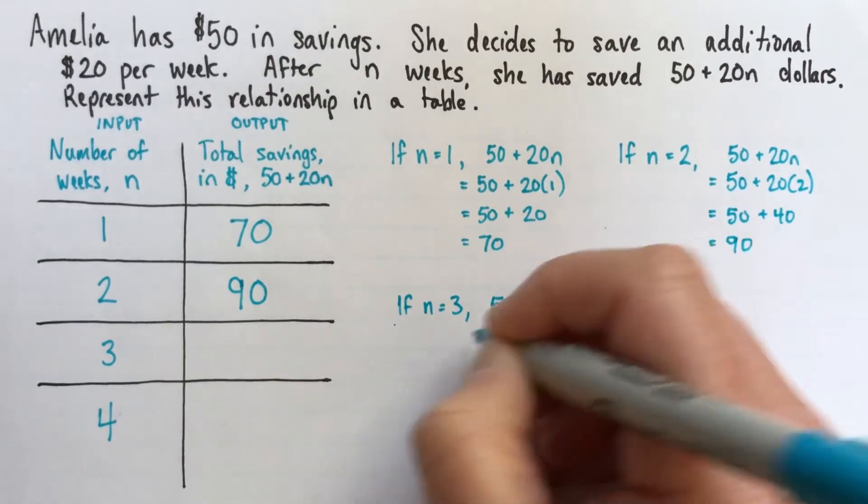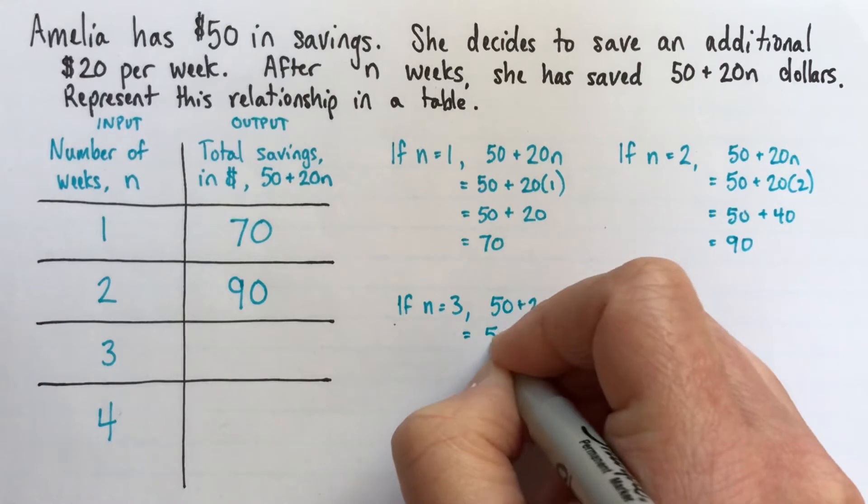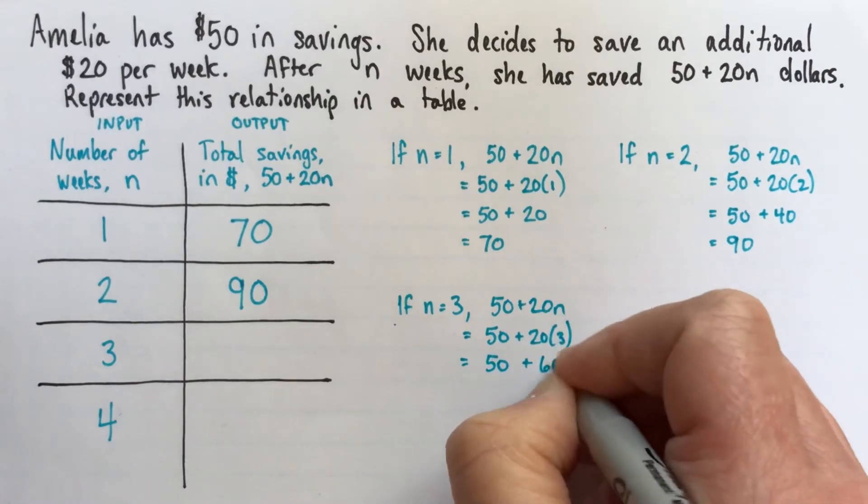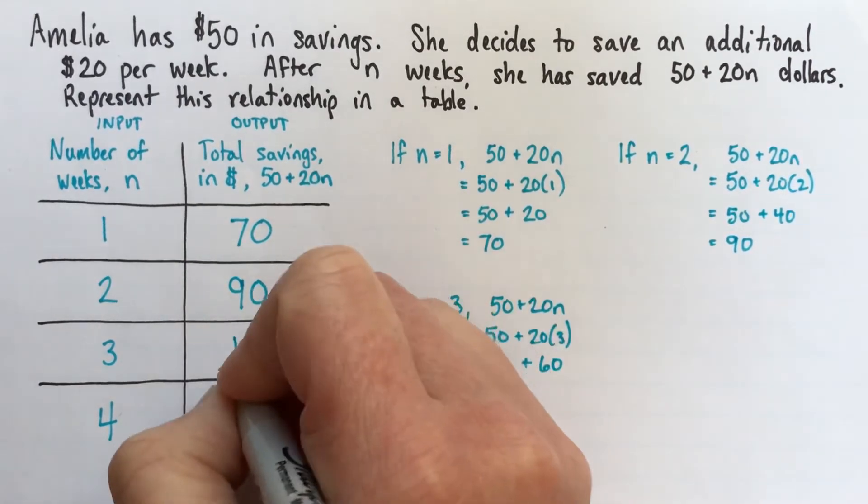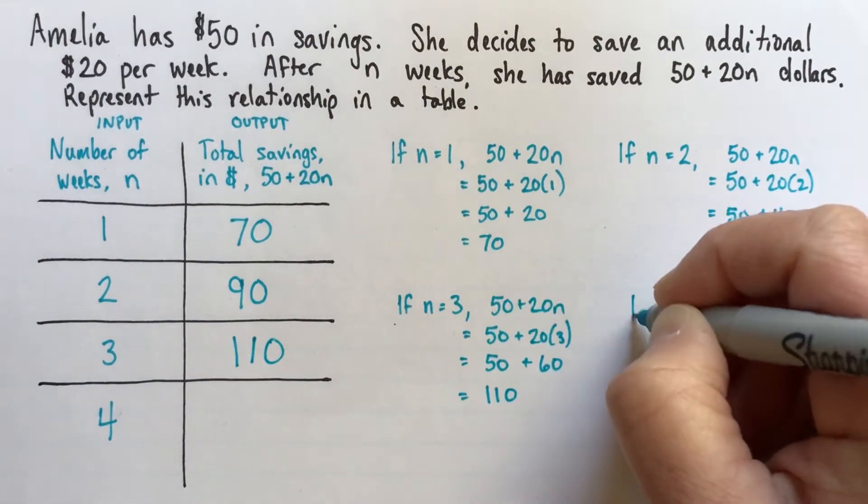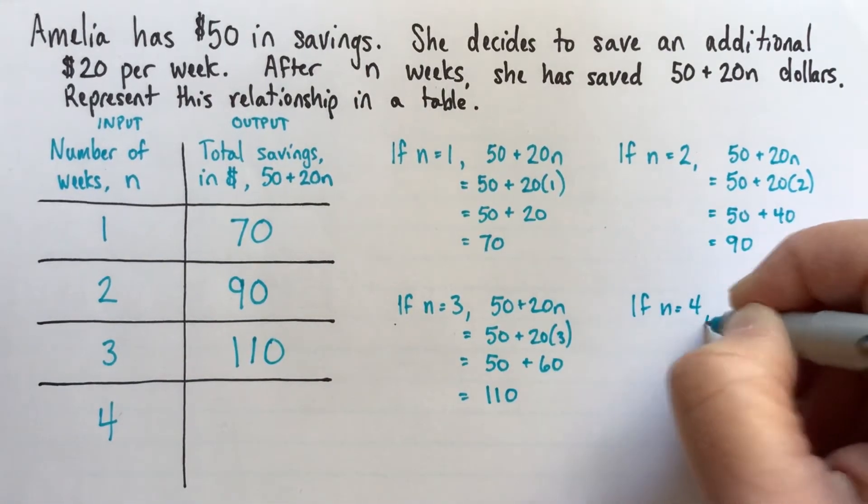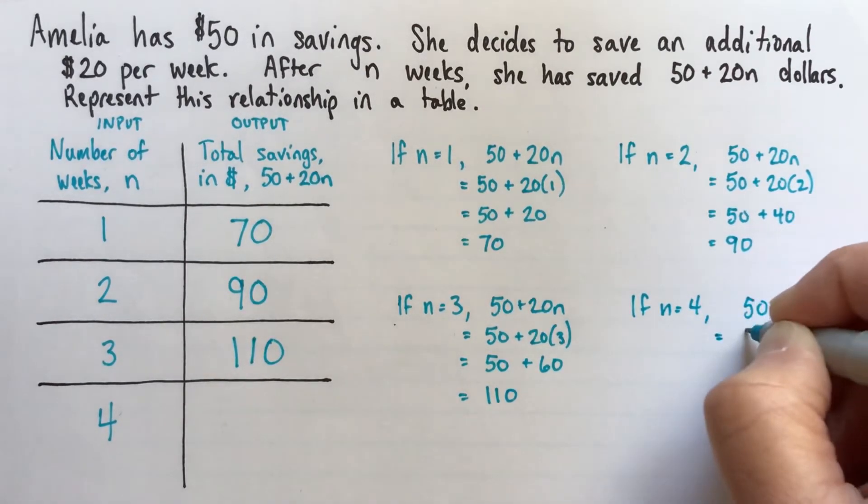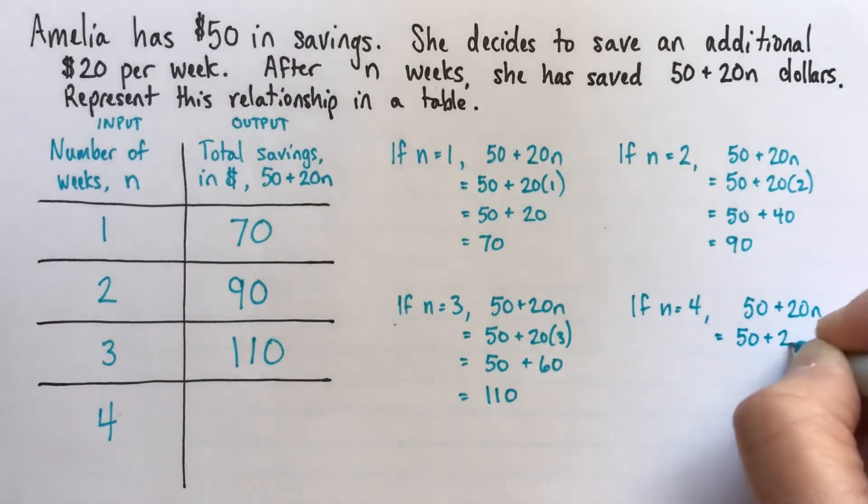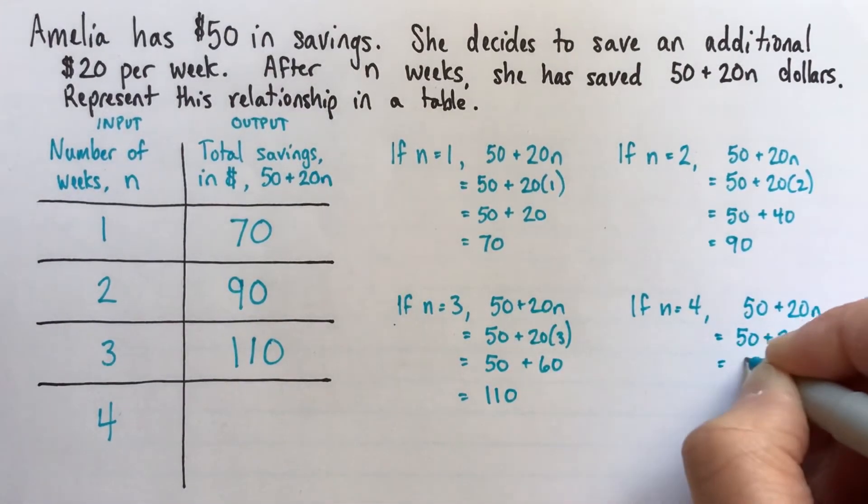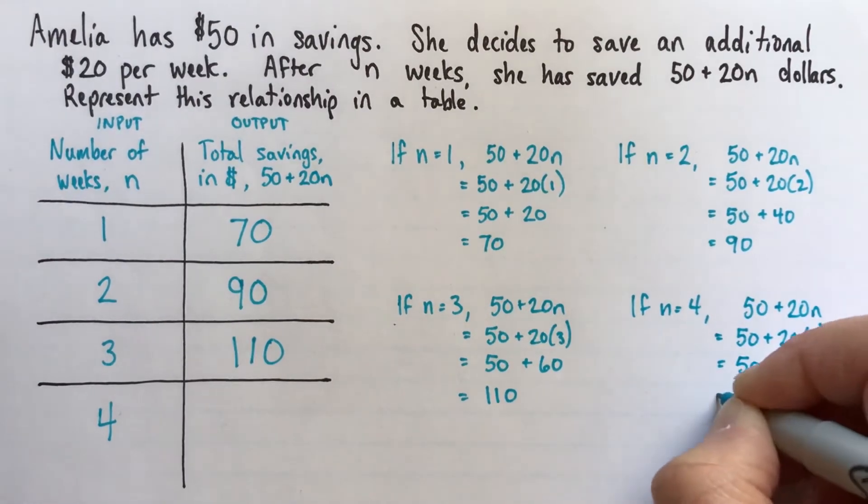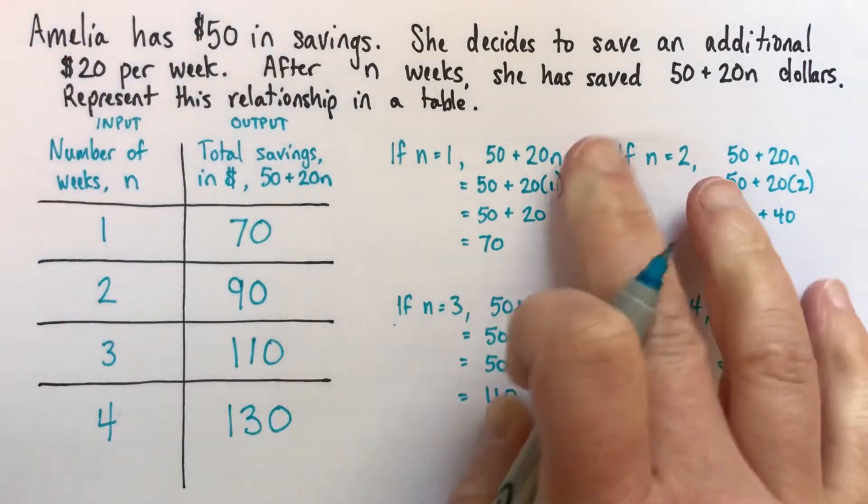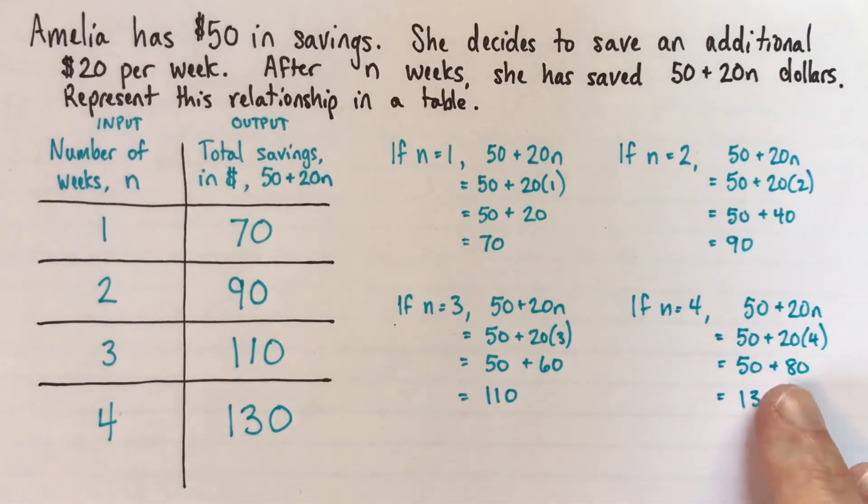So if n equals 3, then 50 plus 20n is 50 plus 20 times 3. So that's 50 plus 60. And that's 110. And if n equals 4, then we'll substitute into 50 plus 20n, we'll substitute n equals 4. So 50 plus 80, which is 130. I suspect that most people will take a bit longer than that to do that, but I've got a lot of years to practice.